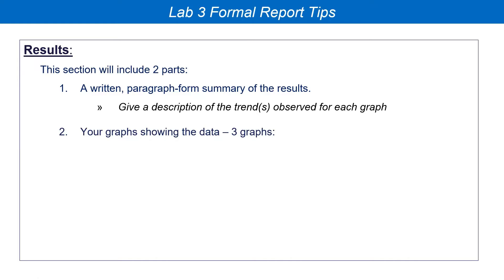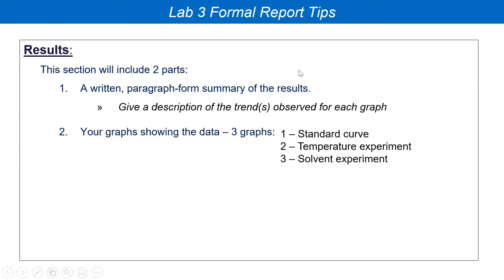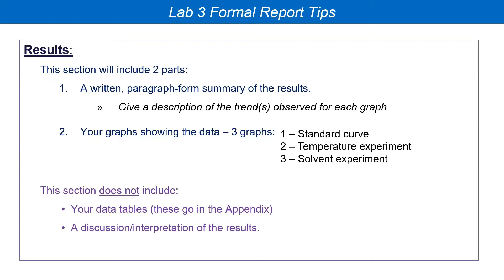The results section includes your actual graphs — you should have three of them, one corresponding to each table: the standard curve, the temperature experiment, and the solvent experiment. This section does not include your tables; that's rough data, which goes in the appendix of your report. You're not discussing your results in this section — you're just talking about the trend. The discussion section is where you give lots of interpretation.